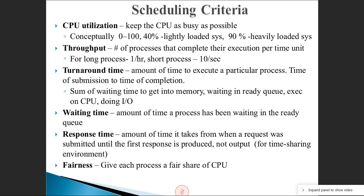One more criterion is fairness. If there are 10 processes, lengthy ones take more time and short ones less time. Every process must get a fair share of the CPU. The scheduling algorithm must be fair enough in its CPU allocation so that no process is unfairly denied execution time.